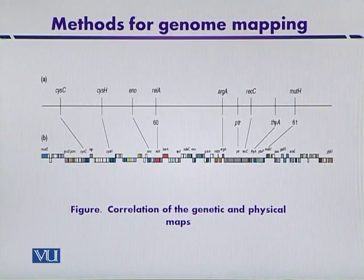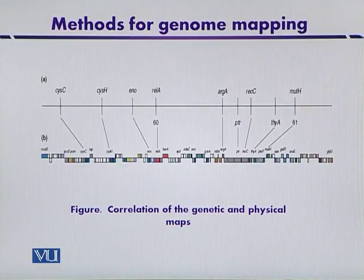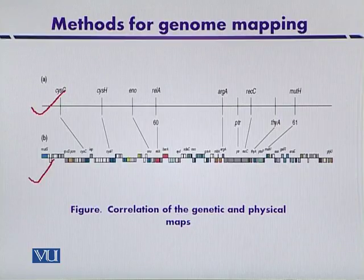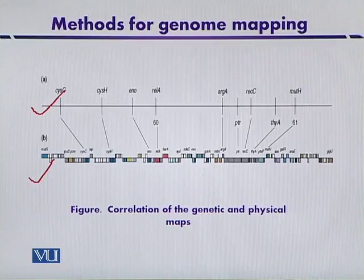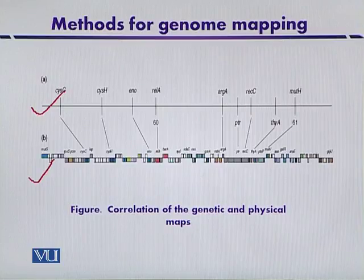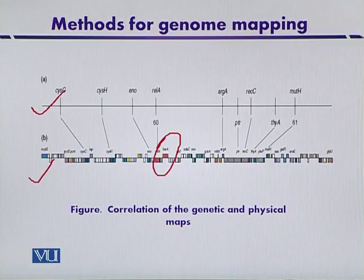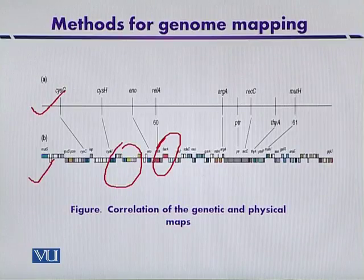This diagram shows the comparison between the linkage map and the physical map. The upper one is the linkage map and the lower one is the physical map, where we have the exact location of a particular gene or genetic marker. In the lower diagram, red areas indicate the position of regulatory genes, and blue areas indicate genes involved in DNA replication, recombination, and related functions.